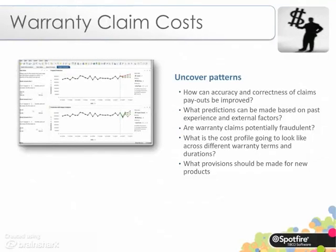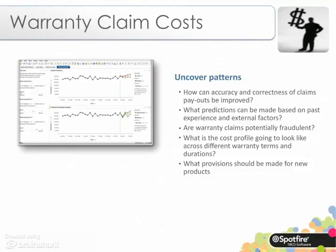Ultimately, we want to be able to control warranty claim costs and the liability that we put aside in order to meet those costs. We need to improve the accuracy and correctness of claims, and be able to predict what future claims might look like in terms of their volume and overall effect on the financial health of the business. It's also useful to identify whether warranty claims may potentially be fraudulent — bringing in external and unstructured data may be particularly useful here. We need to look at what the cost profile will look like across different warranty terms and durations, and this is easily done within Spotfire by exploring the data and using different visualisations to provide insight.